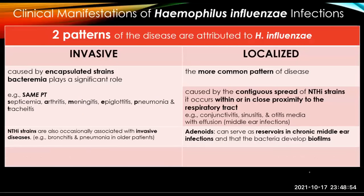There are two patterns of disease attributed to Haemophilus influenzae: the invasive type and the localized type. The first is invasive disease caused by encapsulated strains in which bacteremia plays a significant role. Examples of invasive disease include septicemia — a mnemonic would be 'SAMEPT': septicemia, arthritis, meningitis, epiglottitis, pneumonia, and tracheitis.